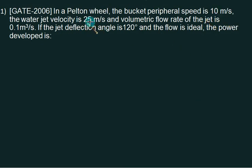This is a question that appeared in GATE 2006. We have given a Pelton wheel, the peripheral speed is 10, water velocity is 25, Q is given, deflection angle is given, we want to find out power developed. So just show first V1, then U. U is equal to 10.